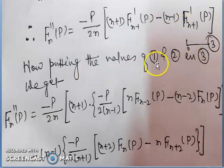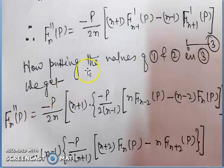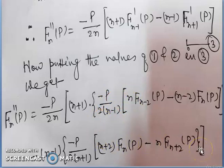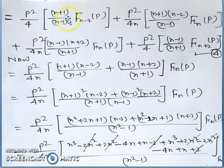Also, fn''(p) = -p/(2n) * [(n+1)*f'_{n-1}(p) - (n-1)*f'_{n+1}(p)]. This is equation 3. Now putting the values of equations 1 and 2 into equation 3, we get fn''(p) = -p/(2n*(n+1)) * [-p * (equation 1 part) - (equation 2 part)].